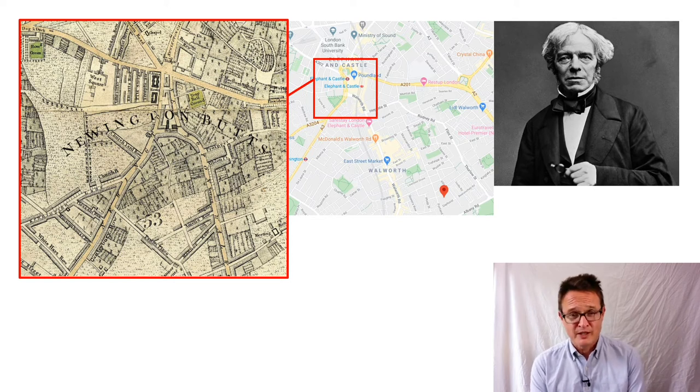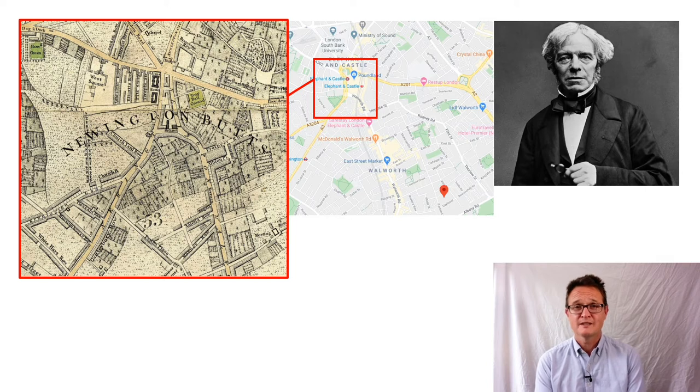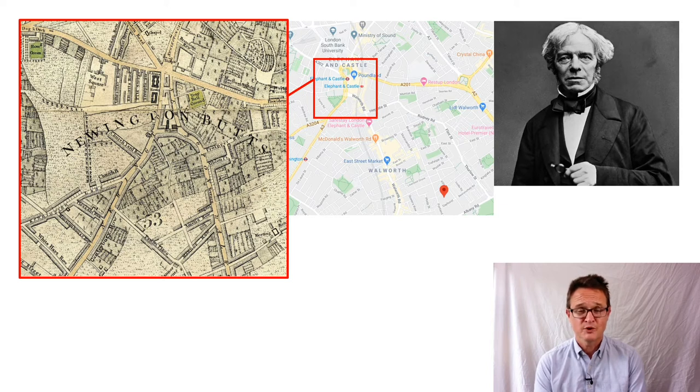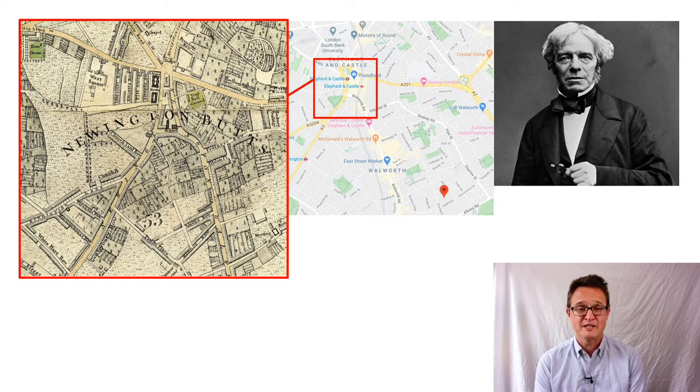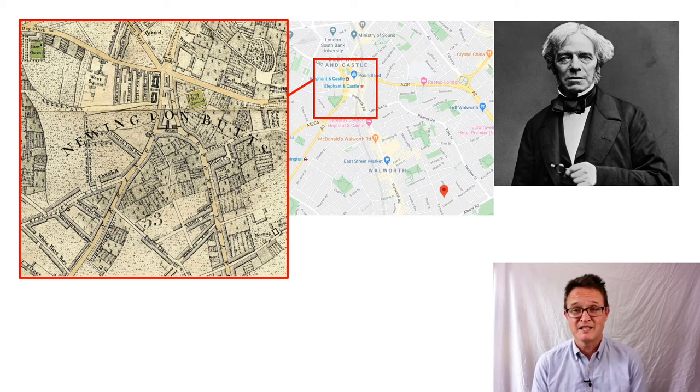But we're not worried about his childhood here. He became, by dint of his own work, application and particularly reading books because he was apprenticed to a bookbinder when he was 14. Not a great deal of education, but he read the books that he bound and a lot of them were scientific. And then he went along to the Royal Institution, listened to lectures by a chap called Humphrey Davy and made copious notes. And eventually got a job with Davy and went on from there to become a great scientist in his own right.